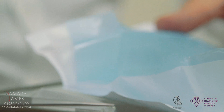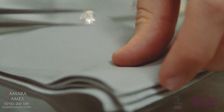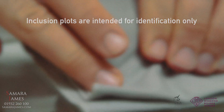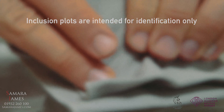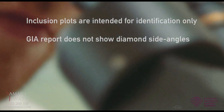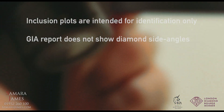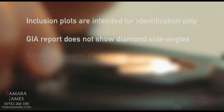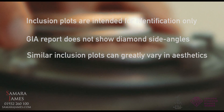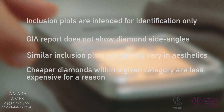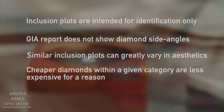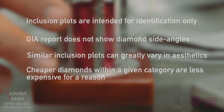Let's recap. Here are the things you need to remember when picking your diamond. Inclusion plots are really helpful for identifying a stone but not for judging the aesthetics of a particular inclusion. The plot shows a top and bottom view only, but the side view is also often important. Similar inclusions in GIA plots often look very different to the eye. When comparing a list of GIA reports, beware of the cheapest stones in the category — their beauty tends to be affected by off-report specific factors.